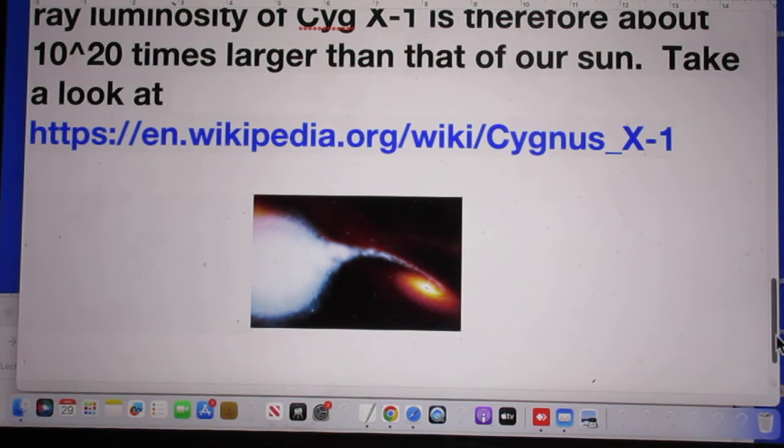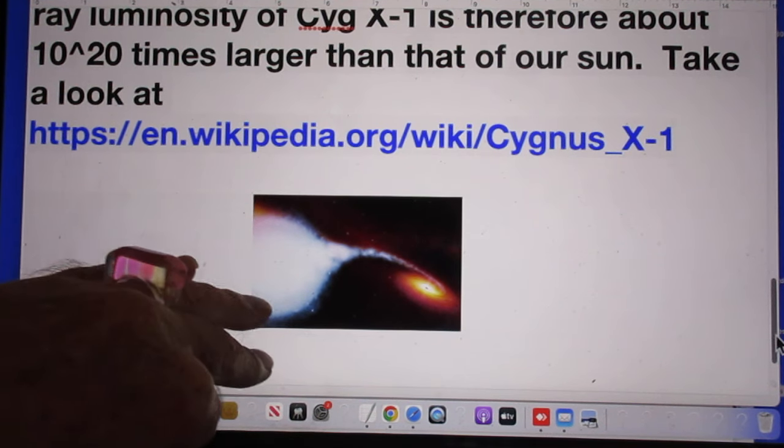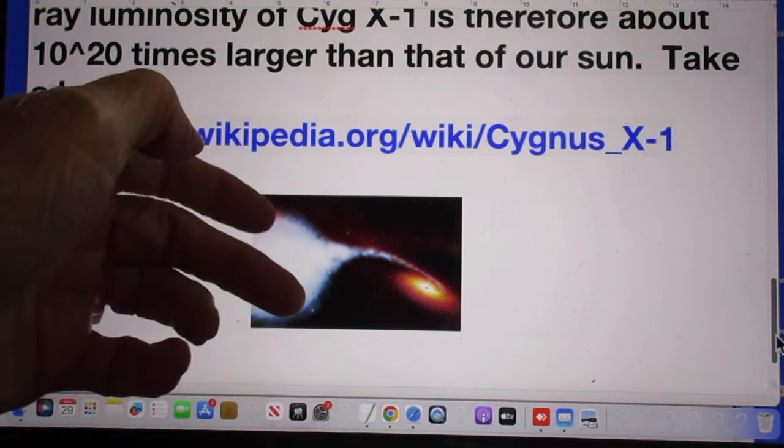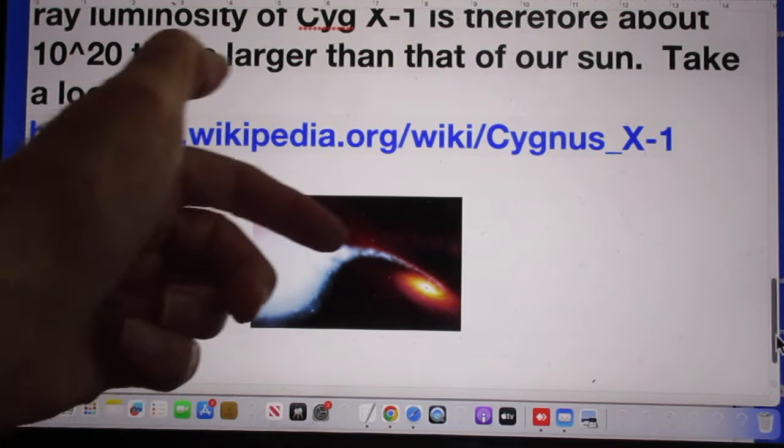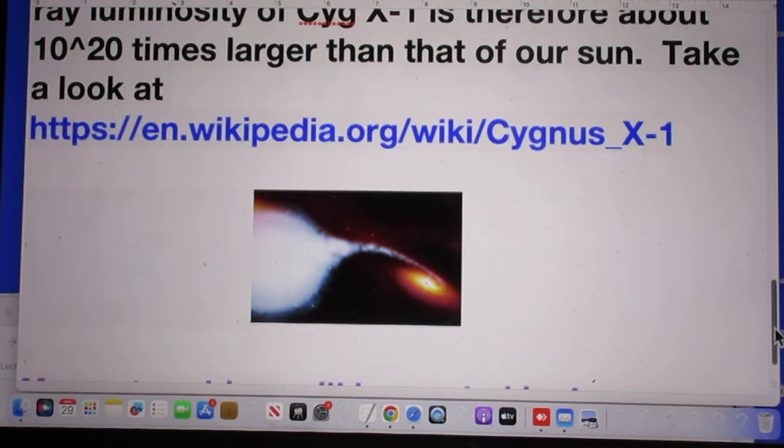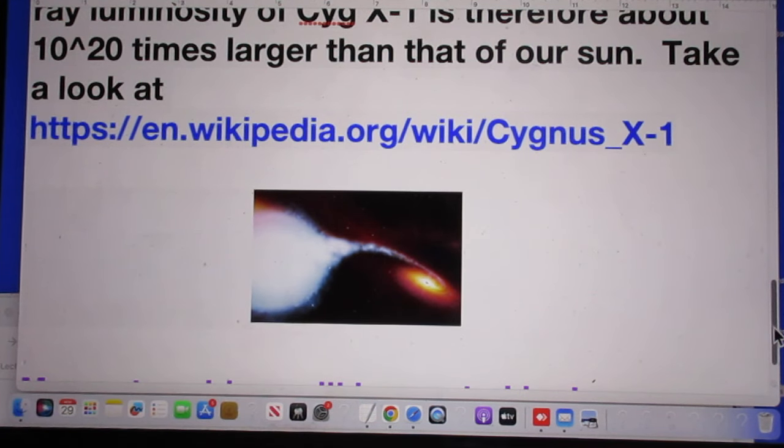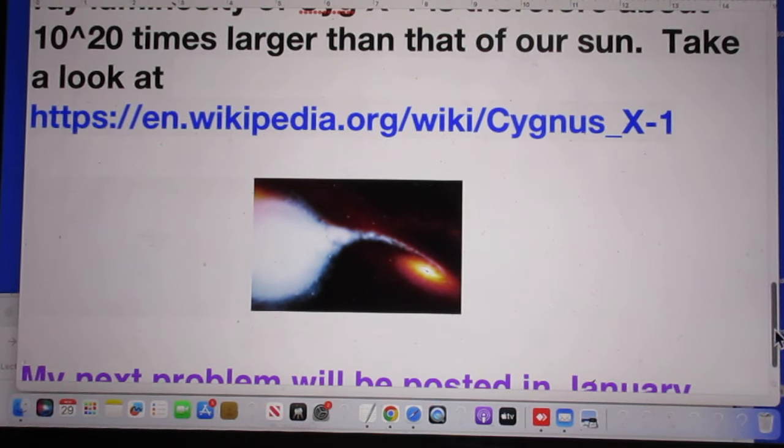You see a picture here. It's very clear. You see here we call the donor star because it donates mass to the black hole. This is an artist's conception. You see the flow of matter onto the black hole. And of course you can only see the X-rays when they are radiated just outside the event horizon.